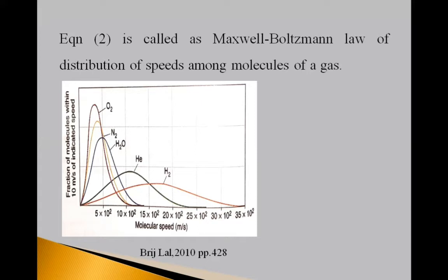So, but the speed of the molecules, velocity of the molecules is not same. Some molecules having less velocity, some molecules having greater velocities and so the velocity ranges from 0 to infinity. Here in this graph, it is shown here on x-axis molecular speed is given and on y-axis fraction of molecules within 10 m per second of indicated speed is shown.